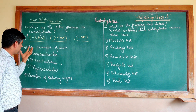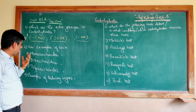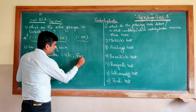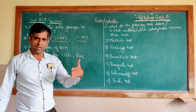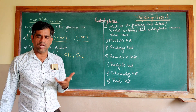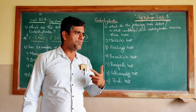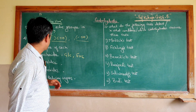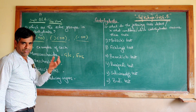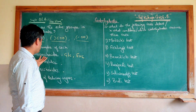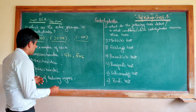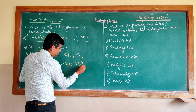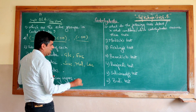The second question: give two examples of carbohydrates. For monosaccharides, the very common ones are glucose and fructose. There are many others — ribose, ribulose, xylulose, galactose — the list goes on, but glucose and fructose are the most common. For disaccharides, we have sucrose, maltose, and lactose.